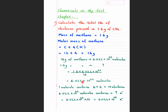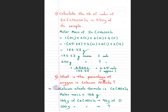Now, how many electrons are in one methane molecule? Methane is CH₄. Carbon has atomic number 6, so 6 electrons. Hydrogen has atomic number 1, and there are 4 hydrogens, giving 4 electrons. So one molecule of methane has 6 + 4 = 10 electrons. Therefore, 6.022×10²² molecules contain 10 × 6.022×10²² = 6.022×10²³ electrons. So 1.6 grams of methane contains 6.022×10²³ electrons — that is 1 mole of electrons.